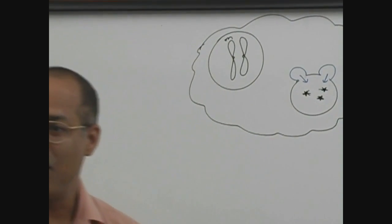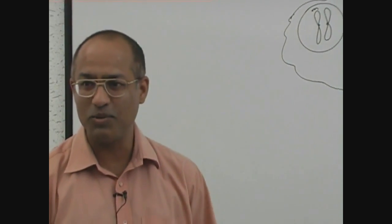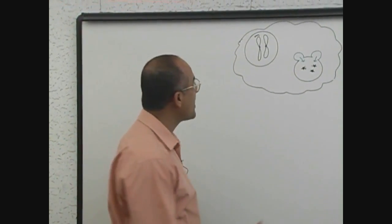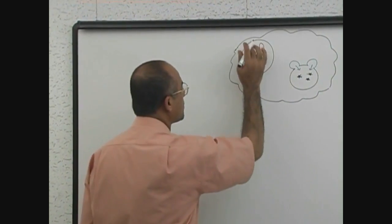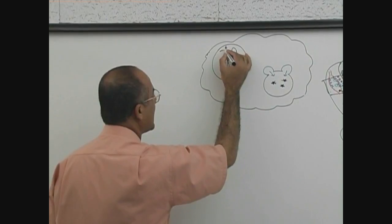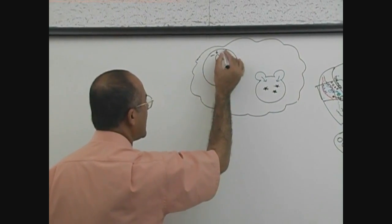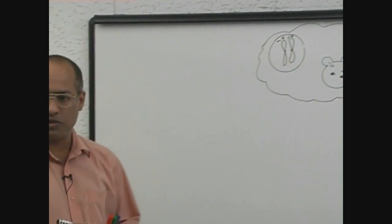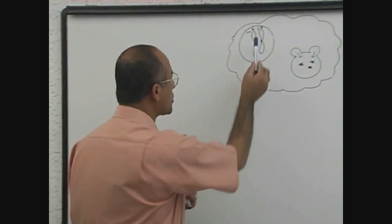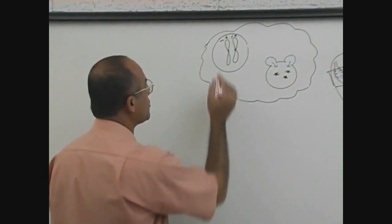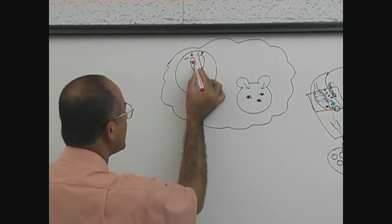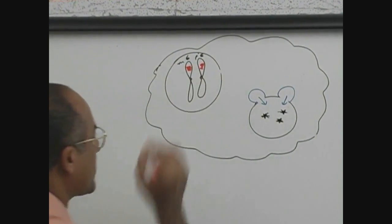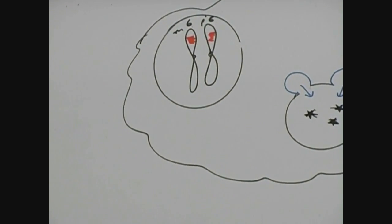Now we are going into molecular level. What really happens, this is chromosome number 6 maternal and this is chromosome number 6 paternal. On these chromosomes, on the short arm, there are very special set of genes, very special set of genetic material.